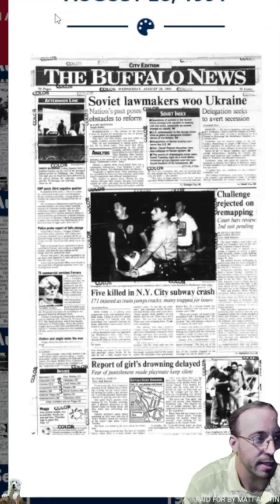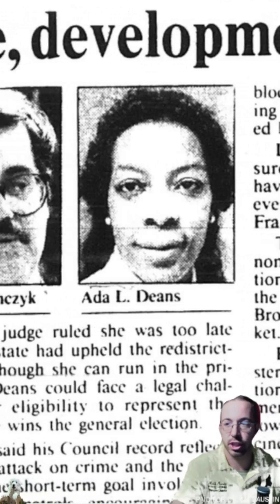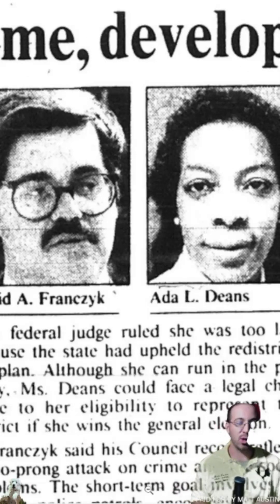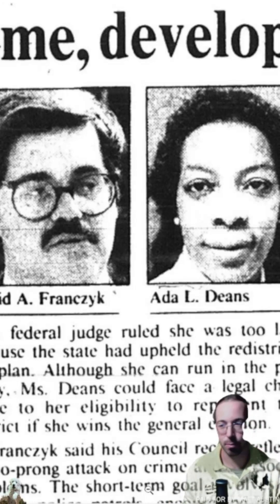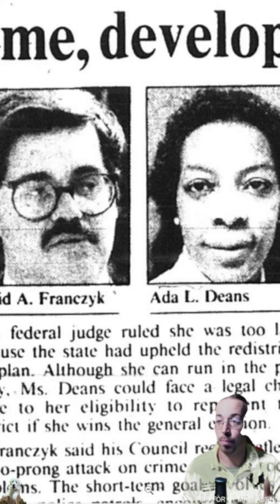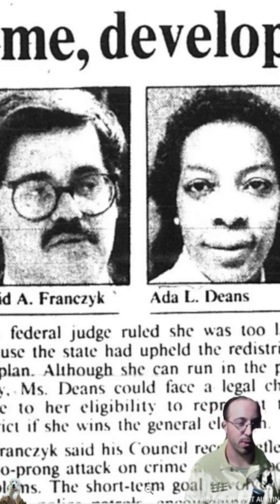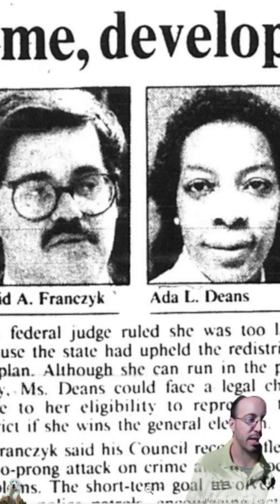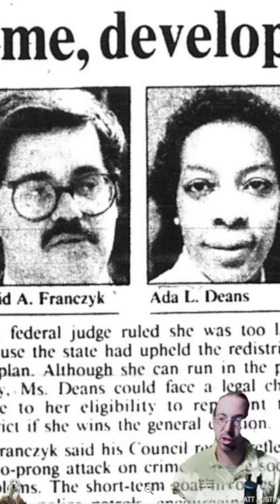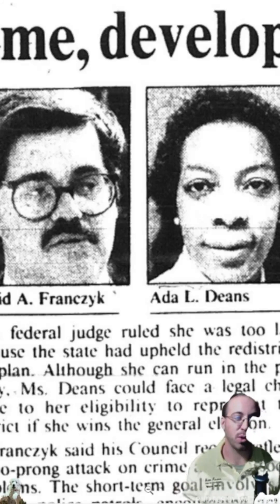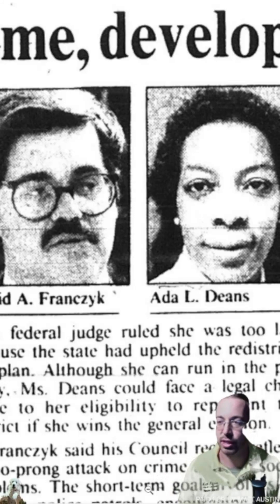We can talk about Ada Dean essentially challenging Dave Fronzak. They ended up using the old maps, so Ada Dean ran for Fillmore council. She was in the Fillmore primary, but she technically lived in Masten because her house had been moved into a new district. Dave Fronzak ended up winning pretty handily with the new districts that increased the majority white composition. If Ada Dean had won, she would not technically have been able to serve and probably would have been sued for representing a district she didn't live in.